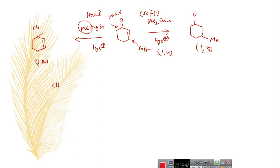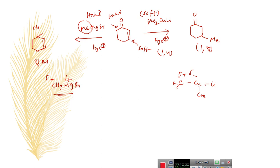In methylmagnesium halide, it acts as a hard nucleophile because the electron pair — the negative charge — is tightly held to the carbon atom. Whereas in dimethyl lithium cuprate, the electron pair is shared between the copper and carbon atoms, so there is only a slight partial charge on the carbon. That is why methyl in dimethyl lithium cuprate acts as a soft nucleophile.